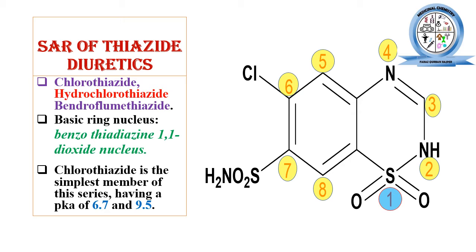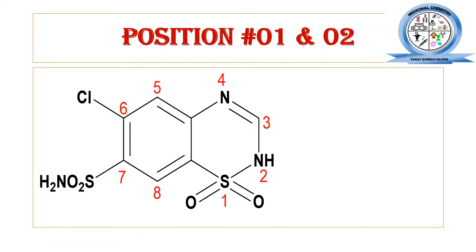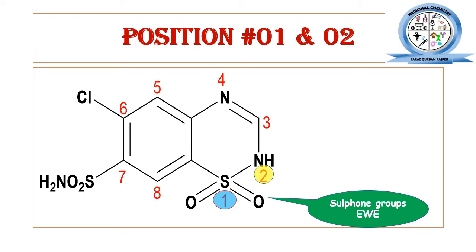At position 1, the sulfone group is present. This sulfone group exerts an electron-withdrawing effect on the chemical structure of the thiazide diuretic and is essential for diuretic activity. It plays a direct role in producing the diuretic effect, and any substitution at this position will ultimately reduce the diuretic activity.